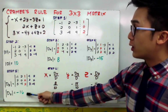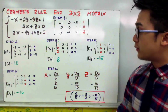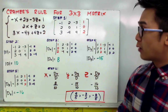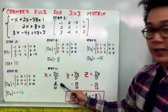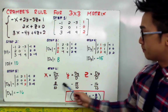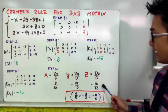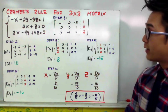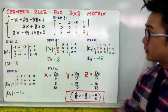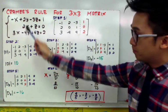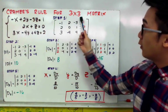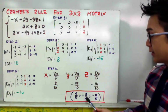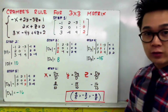Now that we have all the determinants, we can find the values of x, y, and z. This gives us 8 over 10, negative 15 over 10, and negative 16 over 10 for x, y, and z respectively. Therefore, the solution of our linear system using Cramer's Rule with a 3x3 matrix is x equals 4 over 5, y equals negative 3 over 2, and z equals negative 8 over 5.